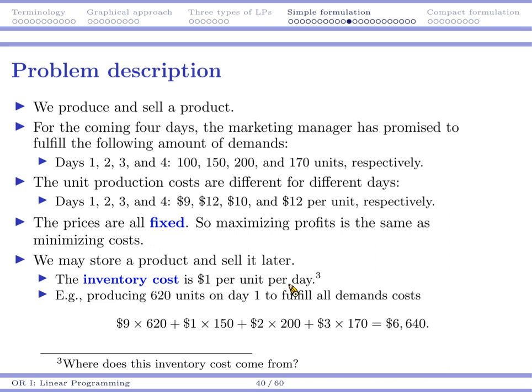So you may consider that as one candidate. There are, of course, other candidate plans. For example, the other extreme is that you pay $9 to produce 100 units, you pay $12 to produce 150 units, $10 for 200, $12 for 170. You may get another cost. But either one may not be optimal because they are just too extreme. There may be some other ways to do the inventory decision.